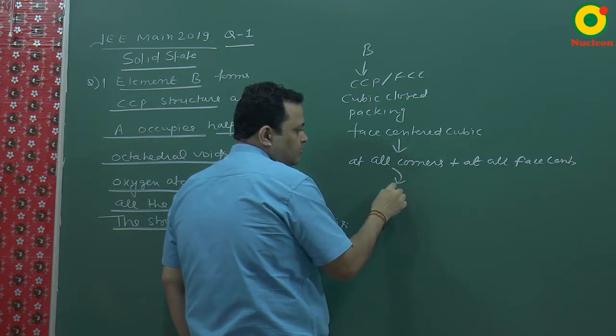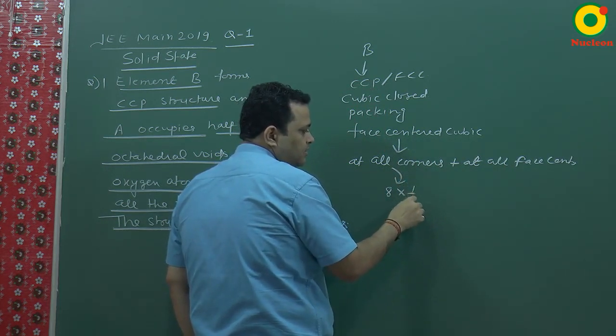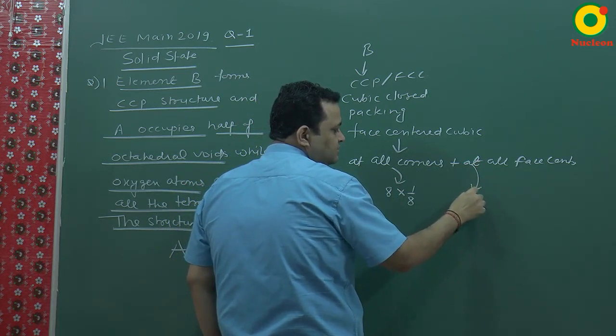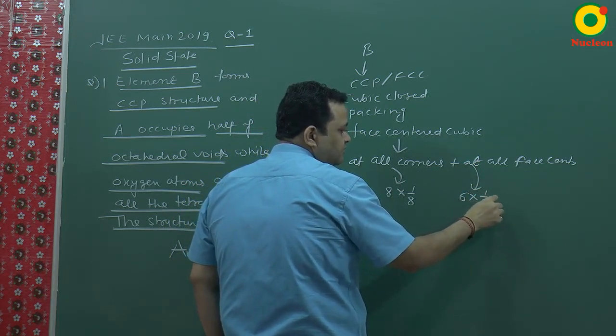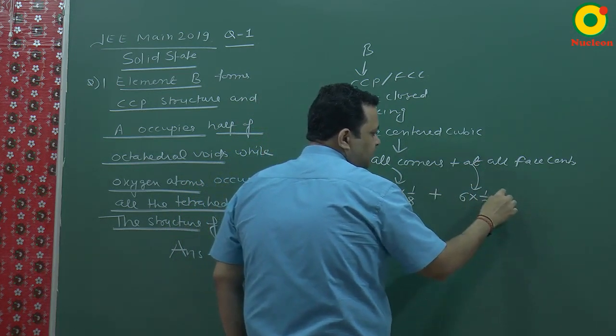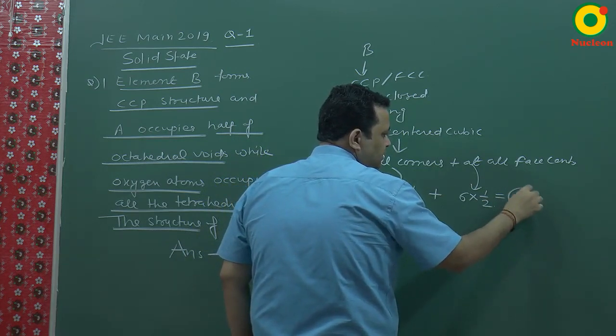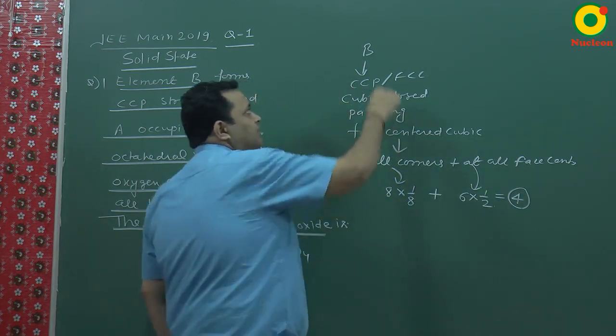Corners, what are they? Eight. And atom contribution of which one by eight? Faces, what are they? Six. Contribution phase for one by two. If we find out, if we write it, four atoms effectively, which are the four atoms? What are B?